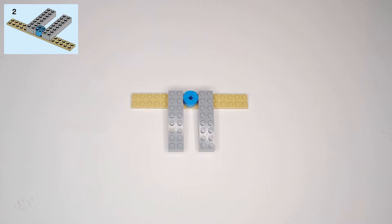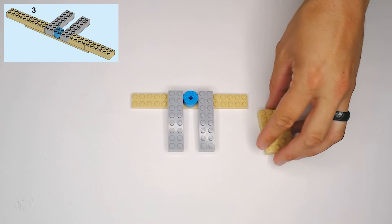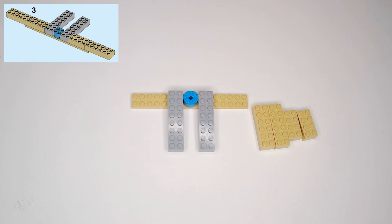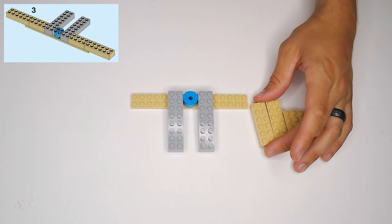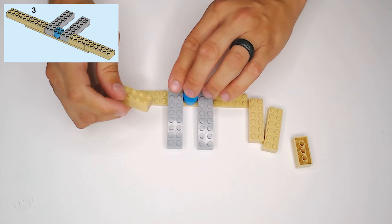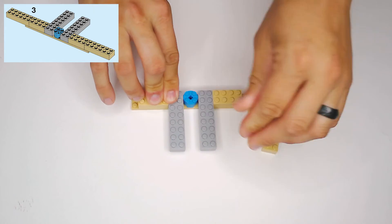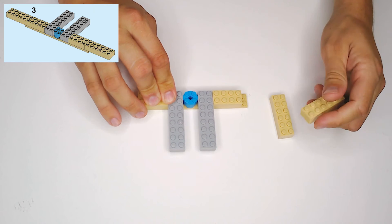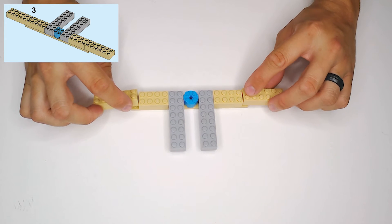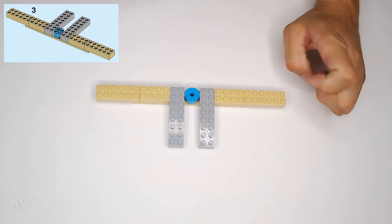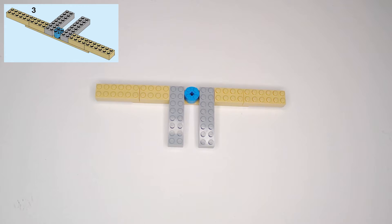And then in step three, we need two of these tan 2x6s and two tan 2x4 blocks. And the 2x4 blocks are going first. They're going to go along, following along with that big tan plate underneath there. And then the 2x6s are just going to be grabbing on each side right here, hanging off the ends. They're just going to grab onto two studs on the end there.